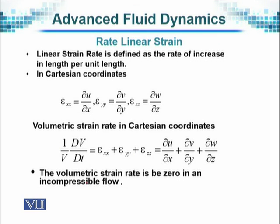Linear strain rate is defined as the rate of increase of length per unit length — the standard definition for linear strain in a straight line. In Cartesian coordinates (X, Y, Z), we have epsilon_XX equal to the partial derivative of U with respect to X, epsilon_YY equal to the partial derivative of V with respect to Y, and epsilon_ZZ equal to the partial derivative of W with respect to Z, using the delta notation familiar from calculus.